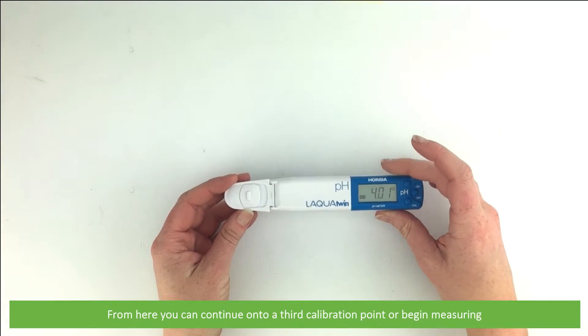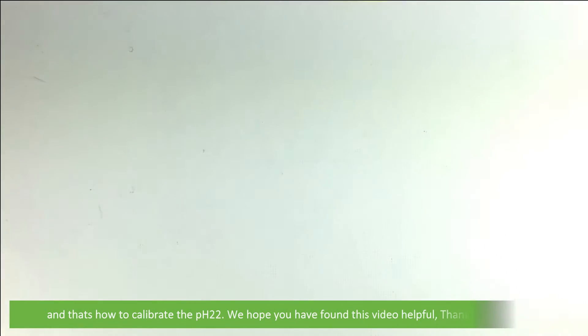From here you can continue on to a third calibration point or simply begin measuring. And that's how you calibrate the pH 22. We hope that you found this video helpful. Thanks for watching.